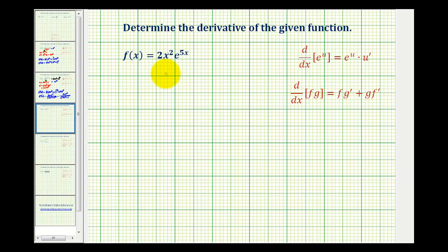We want to determine the derivative of the given function f of x equals 2x squared e to the power of 5x. So we need to recognize here that we have a product of two functions.